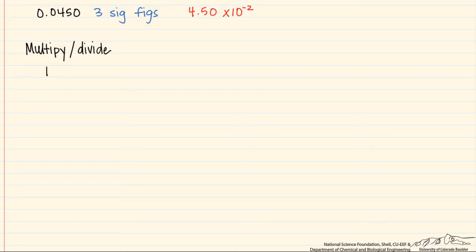And what we do is we report the lowest number of significant figures in any of the numbers we're multiplying or dividing. And this does not include conversion factors.